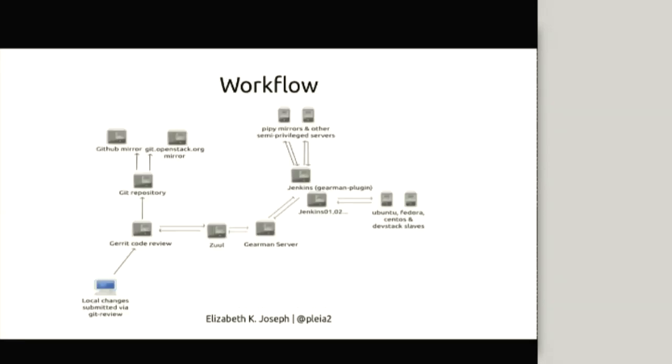From the perspective of me on the OpenStack infrastructure team, the workflow is: you submit changes through git review, which is sort of like a pull request but sends it to the code review system. The code review system sends it to Zuul, which sends it to Gearman, then to the Jenkins servers. From there, it goes off into the slaves and does its testing. This is the continuous integration system we use in OpenStack.